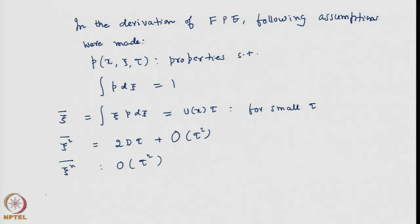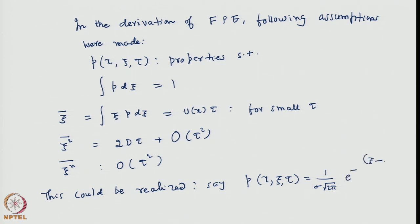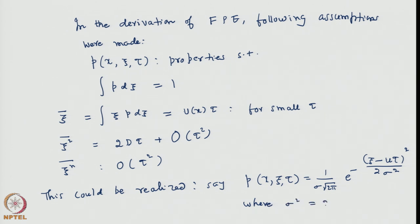Specifically, we took the example that for small tau, P(x, xi, tau) could have the property of a Gaussian: 1 over sigma root 2 pi, times e to the power minus (xi minus u tau) squared divided by 2 sigma-squared, where sigma-squared equals 2d tau. With u and d possibly being functions of x, this completed the derivation.